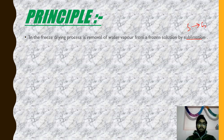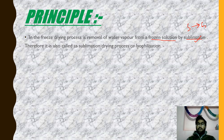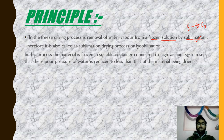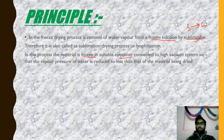In freeze-drying, the frozen solution is the first step, followed by the sublimation drying process. In this process, the material is frozen in a suitable container connected to a high vacuum system, so that the vapor pressure of water is reduced to less than that of the material being dried. The material is frozen in a suitable container, which is connected to a high vacuum system to reduce the vapor pressure of water below that of the material to be dried.